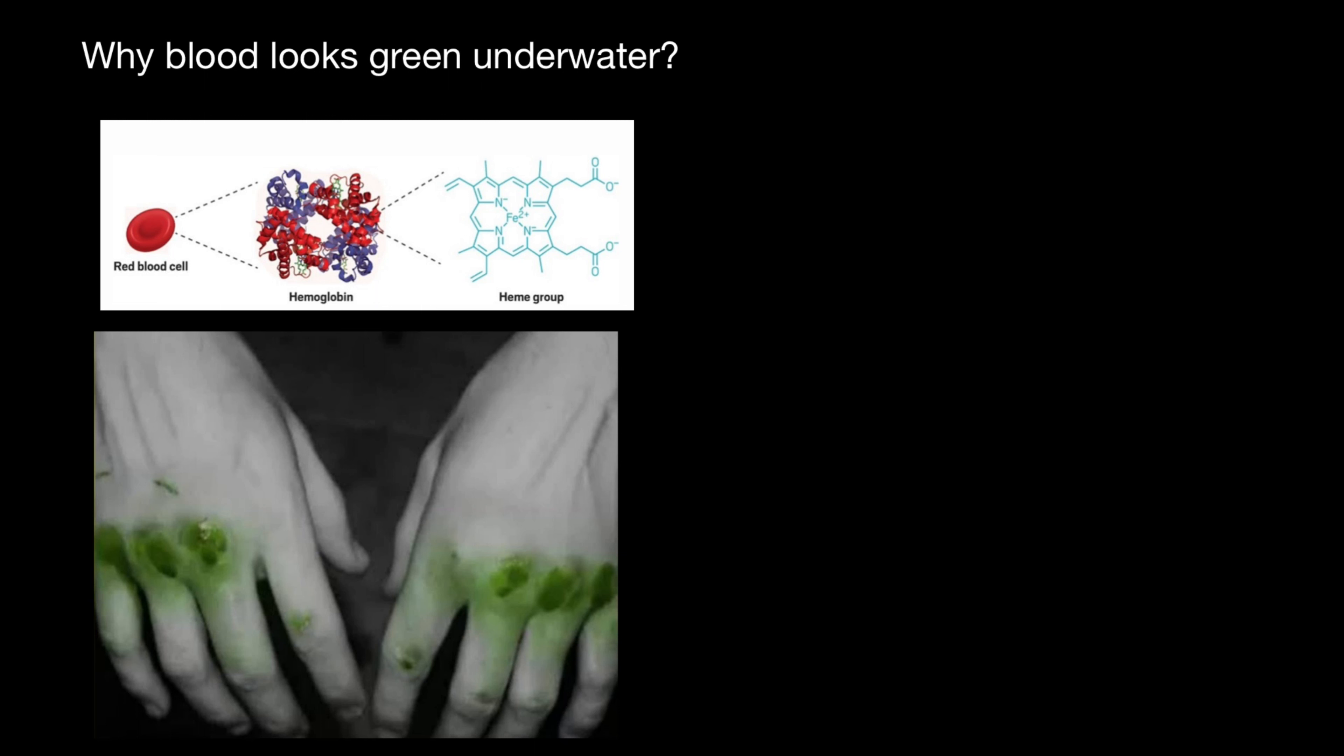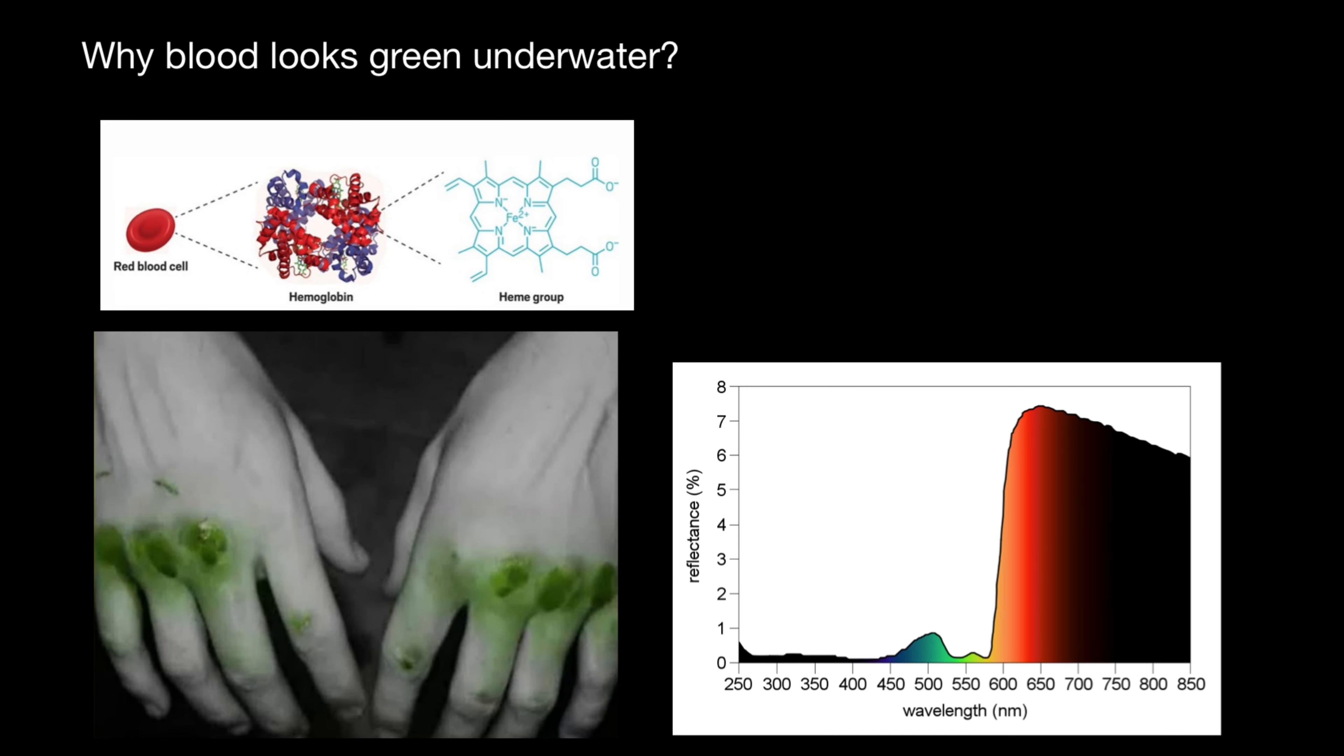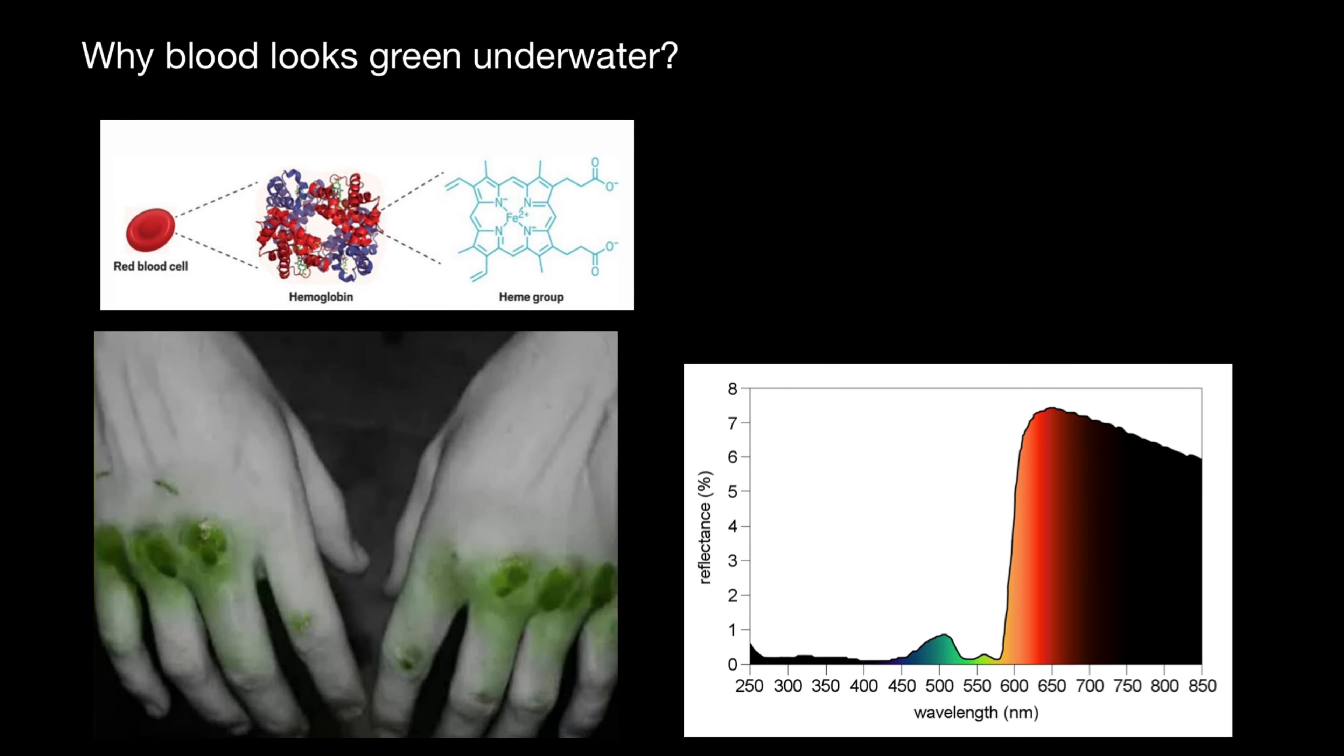But the truth is that if we'll study our blood with special equipment, we are going to find that our blood reflects mostly green and red color. But if our blood is red and green, why we perceive it as only red? Take a look.